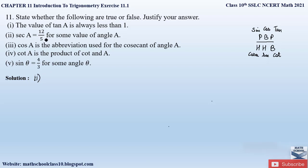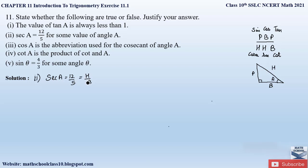Now the second part says: 'sec A = 12/5 for some value of angle A.' Let us draw a right angle triangle. The trigonometric ratio for secant is hypotenuse by base. So here, hypotenuse = 12 and base = 5, as given.